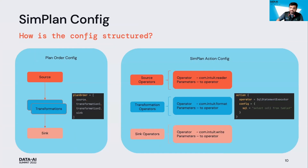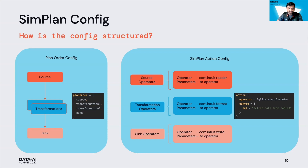Let's look at how a Simplan configuration looks. It mainly has two parts: the execution order, and how the operators are defined. An operator structure typically looks like this — you define an operator, in this case a SQL execution operator, and pass parameters to it, such as a SQL statement. You can define as many operators as you want, and then define the plan order for execution.